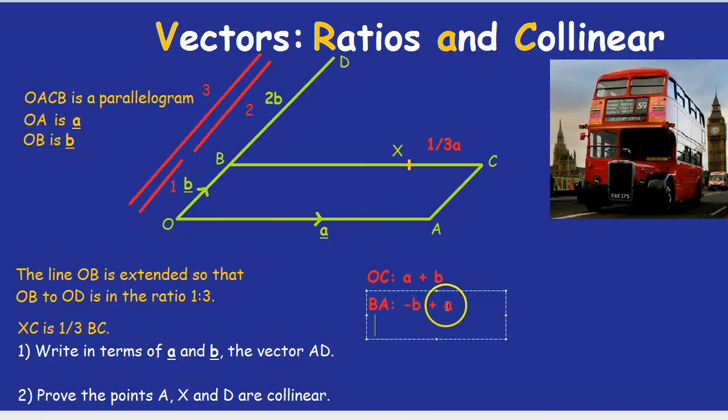I can write that in the same way, just having the a first. So a and then negative b. So BA is a minus b. It's the same thing as minus b plus a.